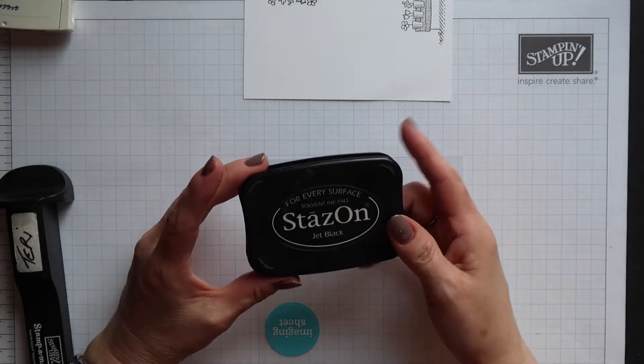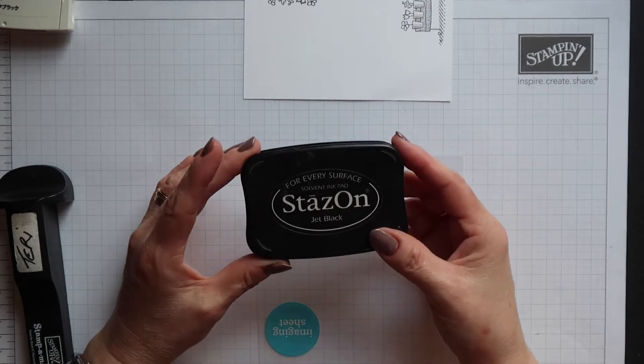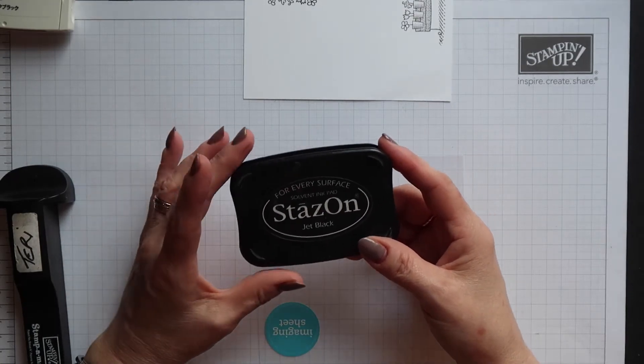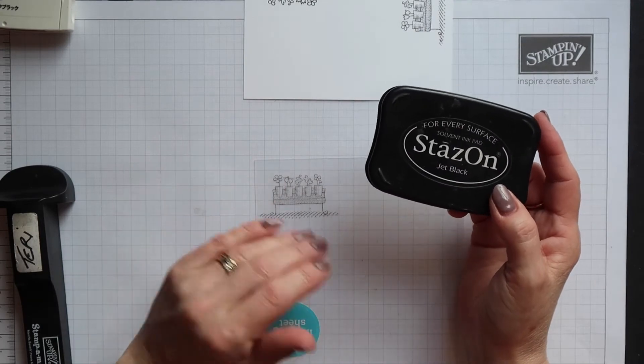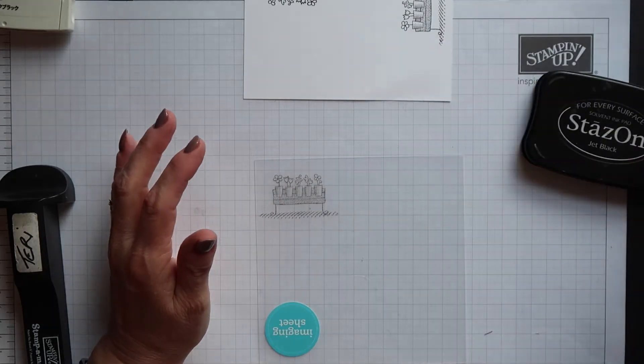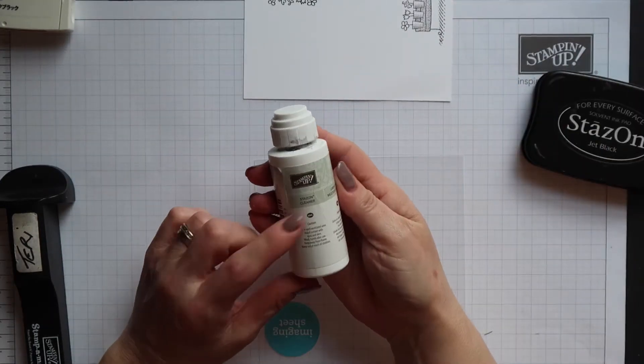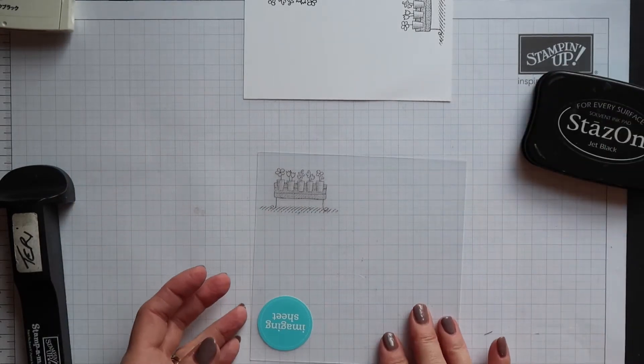If you use Stazon ink with your imaging sheet then it will be permanent so once dry it won't rub off and you won't get ink on your fingers. When you do want to remove it you'll have to use a Stazon cleaner to do so.